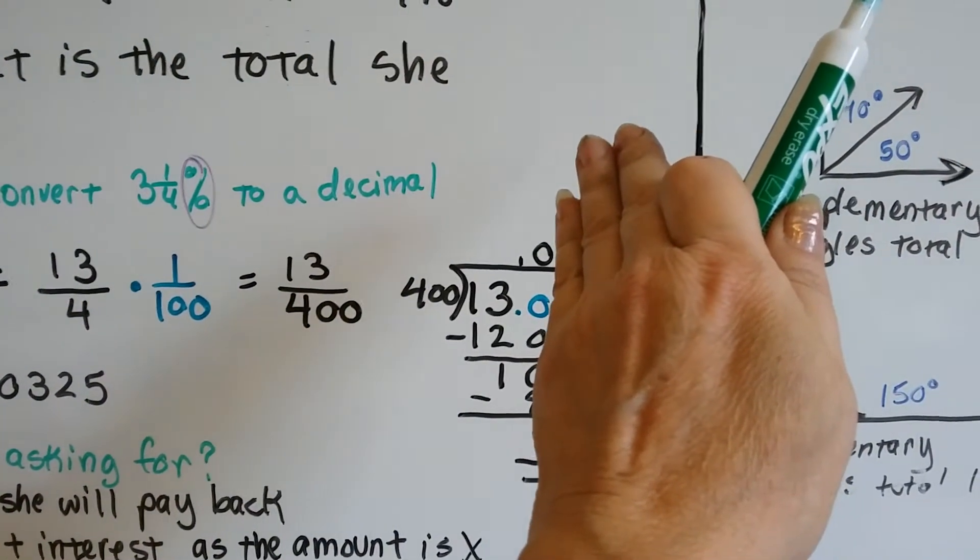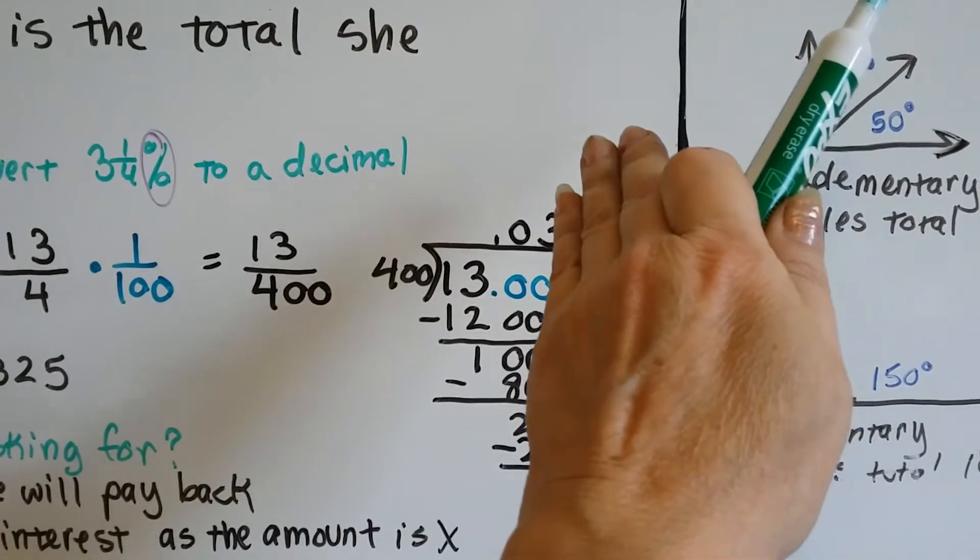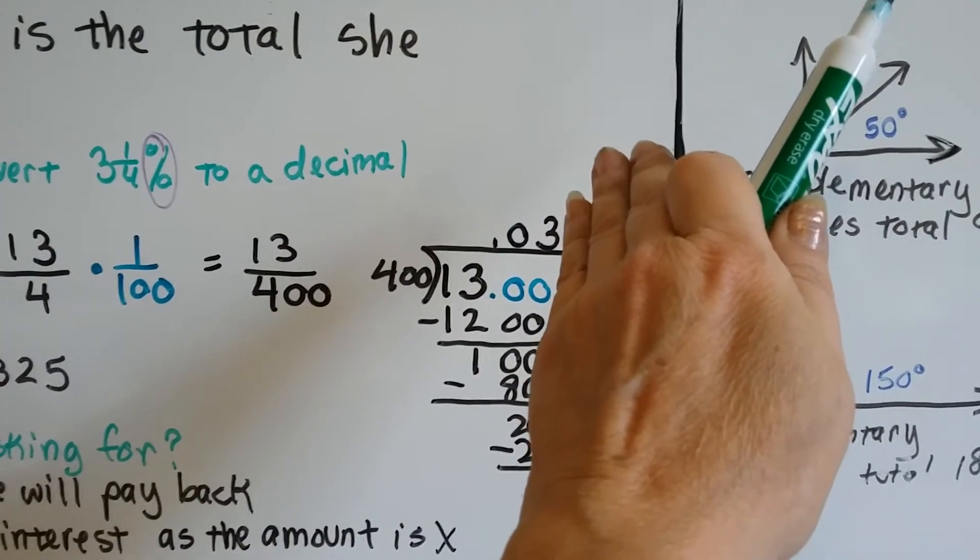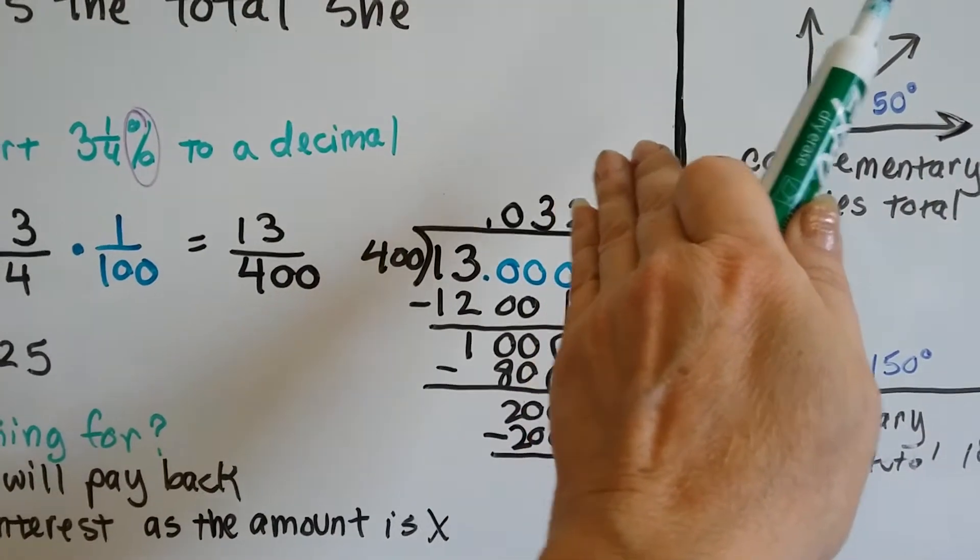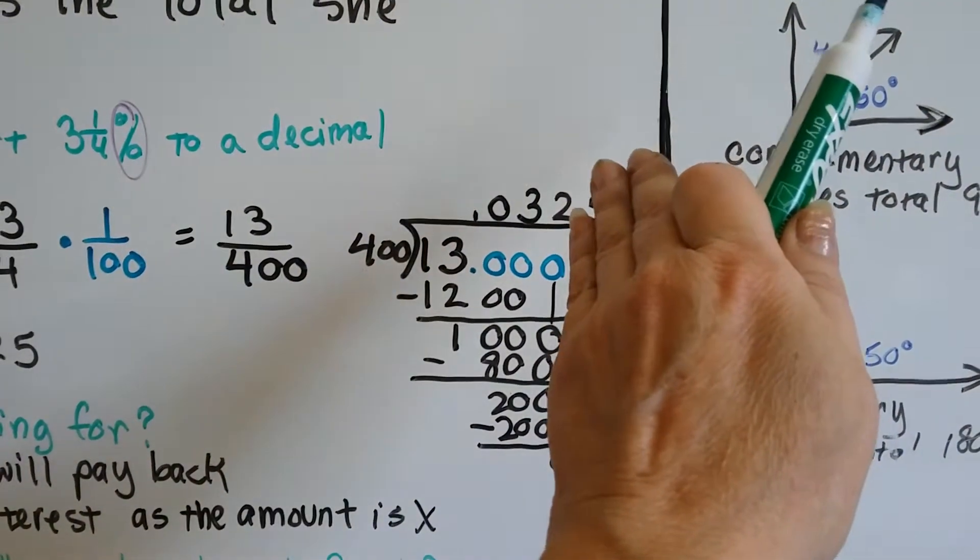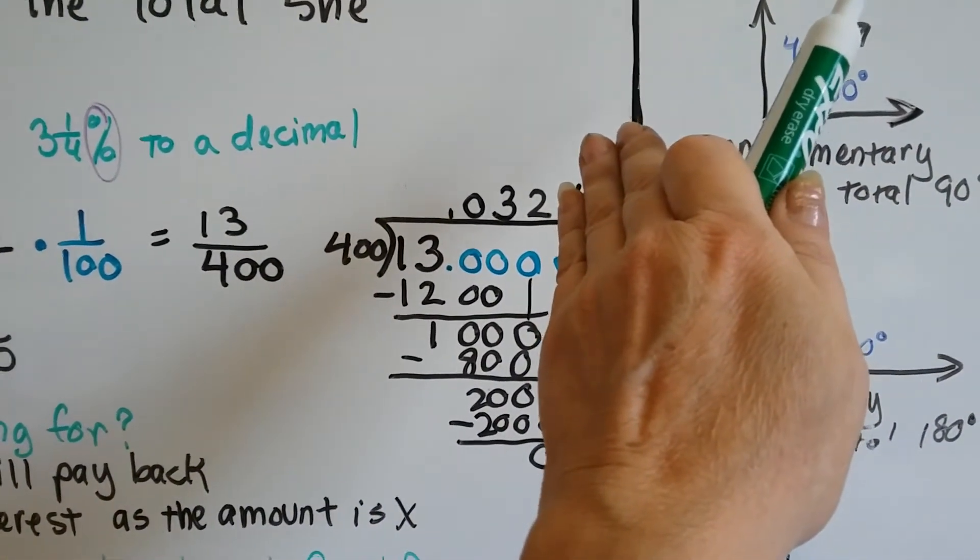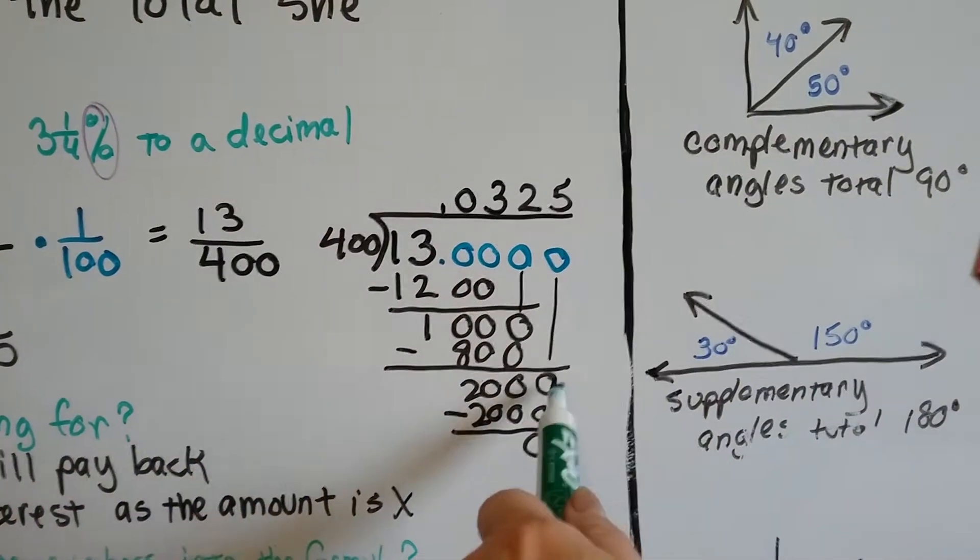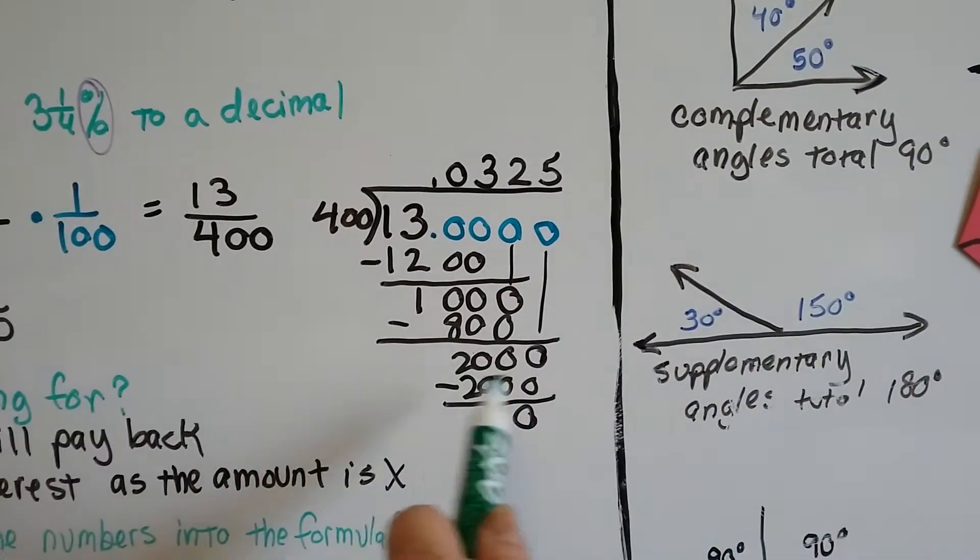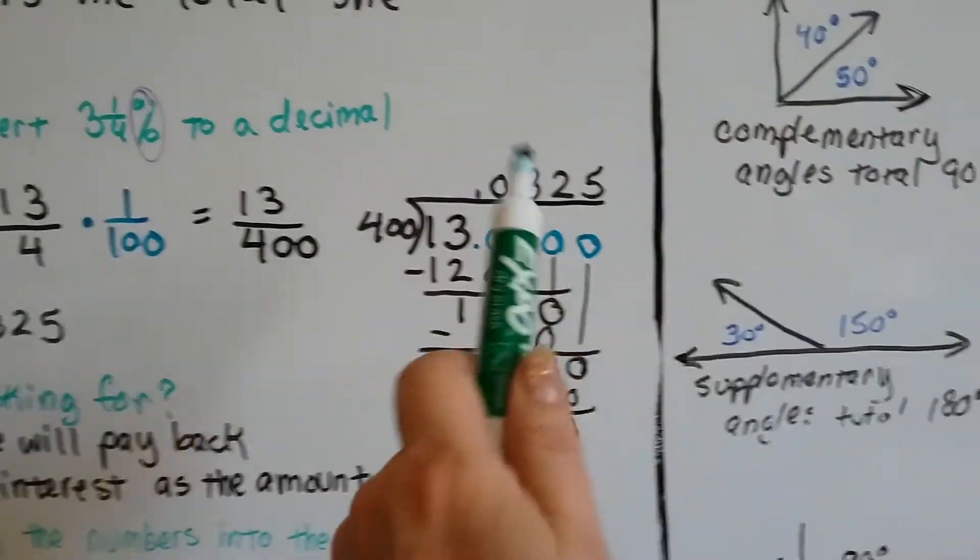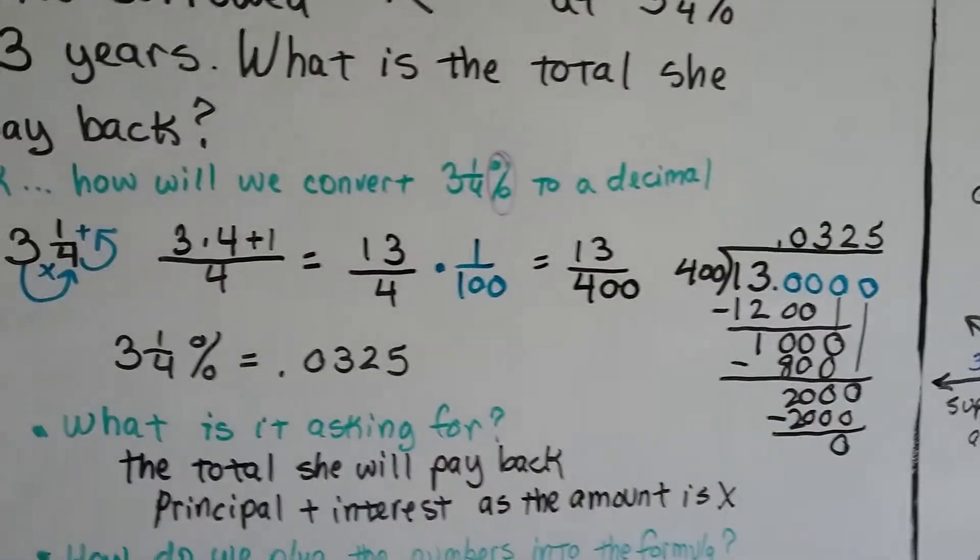And we say, can 400 fit into 130? Nope. So we put a zero up here. Can it fit into 1300? Yes. Times 3, it's 1200. We put that down there and subtract and get 100. And we drop our next zero. Can 400 go into 1000? Yeah, two times. It would be 800. We put that down and do our subtraction and get 200. We drop our last zero. 400 goes into 2000, five times. We do our subtraction and get zero. And we know that 3¼% comes out to .0325.